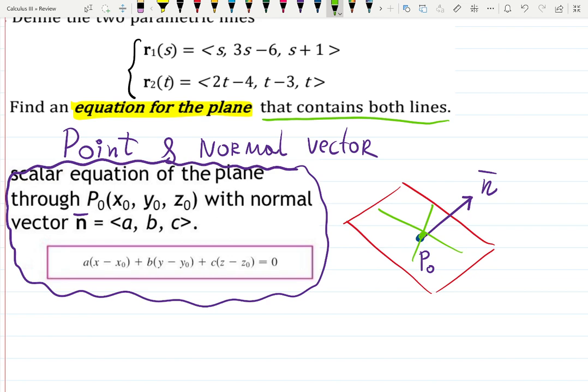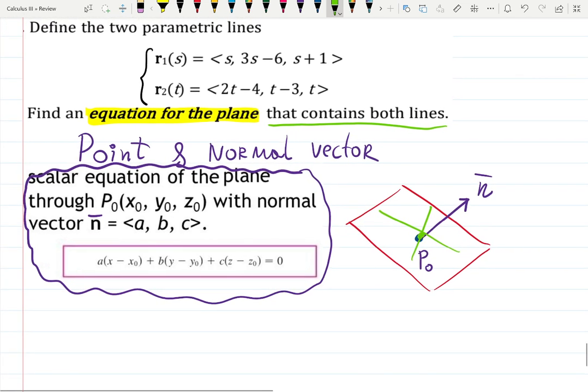Okay. So let's find the intersection of those two lines and use that point as the point that belongs to the plane. Because it is possible to do that. And then we're gonna find a normal vector.